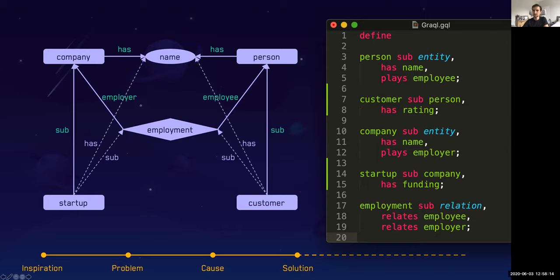Let's say we extend the model and we say that there's also startups and there's customers. So we say that a customer is a subtype of a person that has a specific rating. Now this customer will inherit all the properties, the roles, the attributes that a parent has. Here we also have a startup that is also subcompany that effectively becomes a subtype of a company.